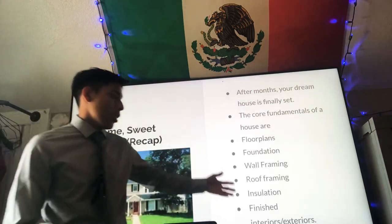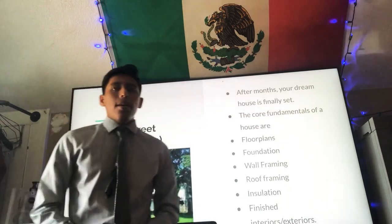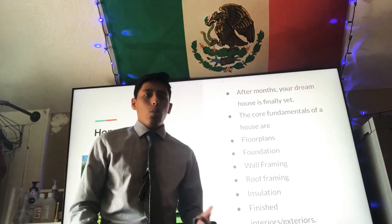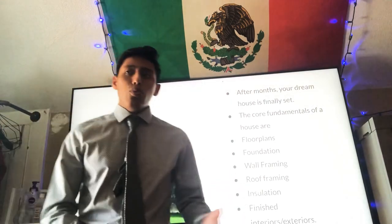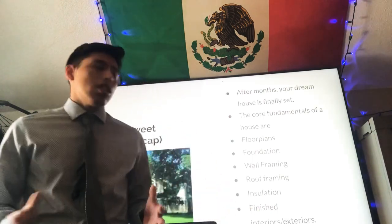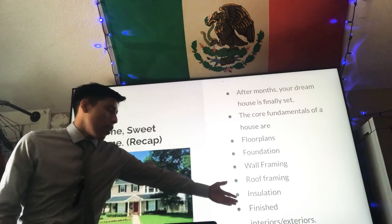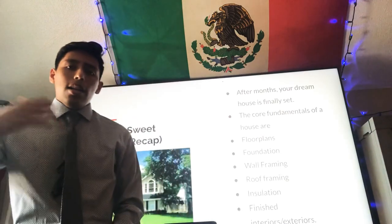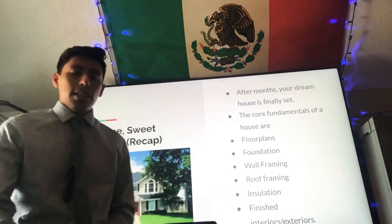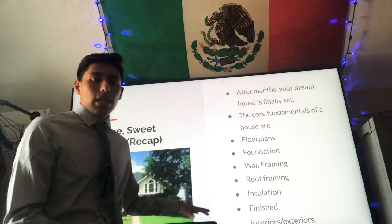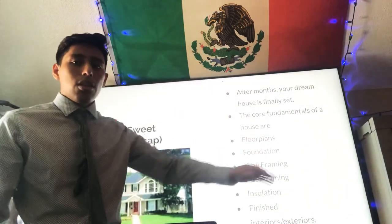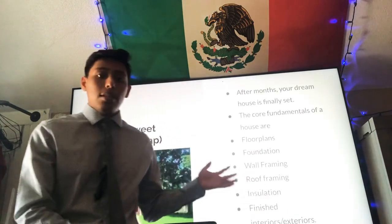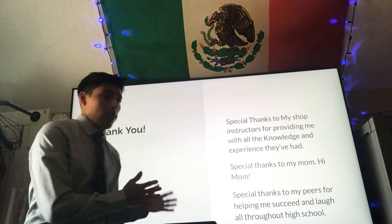Once that's done you put your insulation, which is very important because it prevents hot or cold air from entering or escaping your house — so if it's a hot day and you have air conditioning you don't want all the cold air going outside. Then you have your finished exteriors and interiors — pipes, electrical wires, faucets, sinks — and once you have all those things done you're basically done. You can paint the house whatever color you want and furnish it however you like. Your house is done.